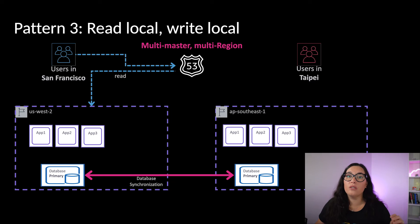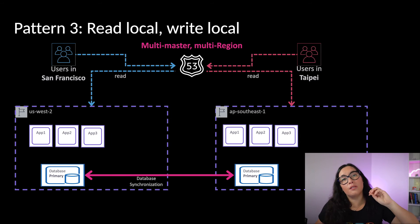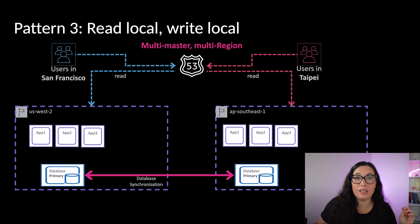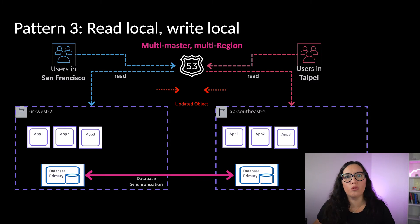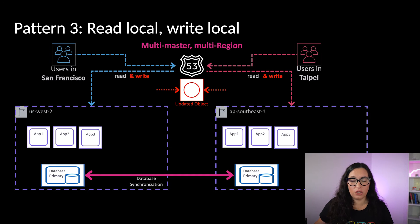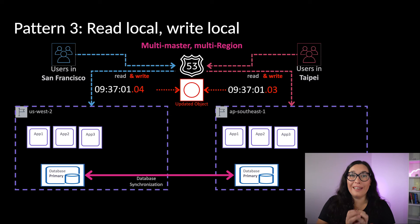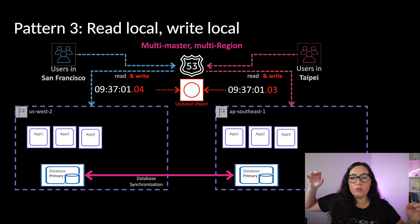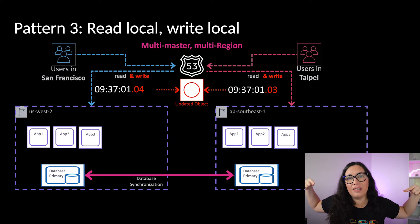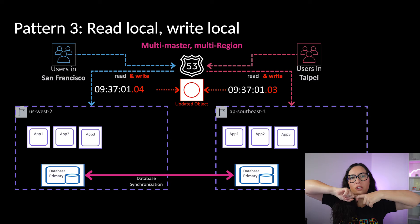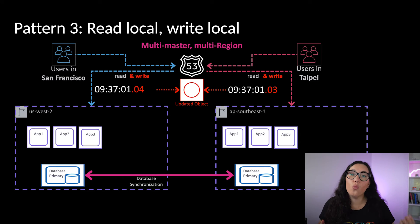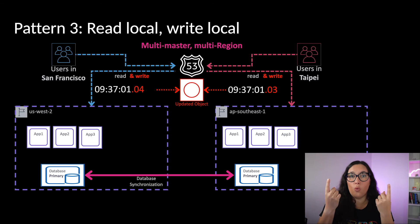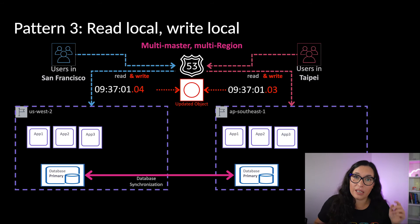In this case, users in San Francisco read and write from Oregon, and users in Taipei read and write from Asia Southeast. They both write to the database and we have a collision, because the latency causes a conflict. Believe me — if you think this will never happen to you, it will happen the second you start doing this if you're not careful. Both users write the same object, and when the data syncs we have a collision. Your application needs to define which one is the latest item to resolve the collision, since only one element can be the last write.